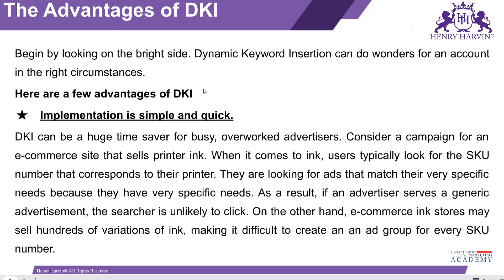Your ad will be triggered by these three keywords. In the headline, to use DKI, you use curly brackets with the word 'keyword' followed by a colon — that is the simple function. When you use this on the headline, Google understands that when the ad is triggered by the three keywords, it will be triggered by German cake cups, Indian cake cups, or eggless cake cups.